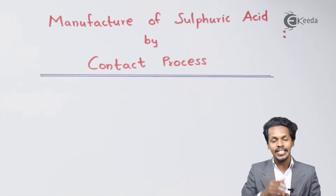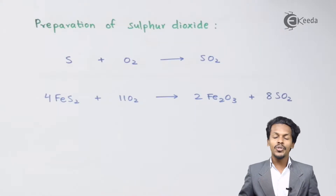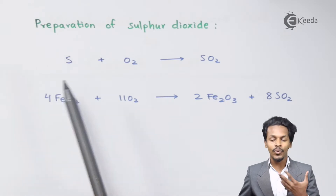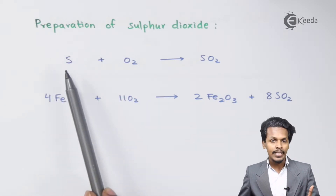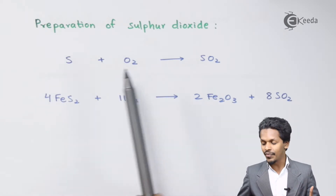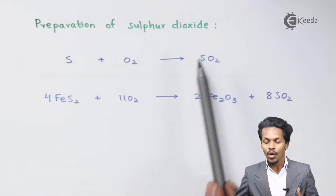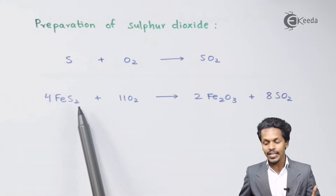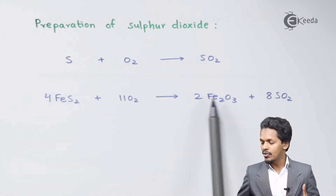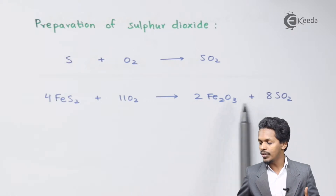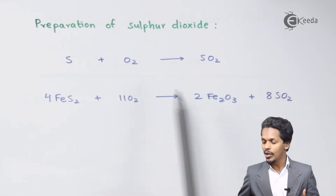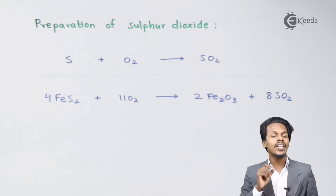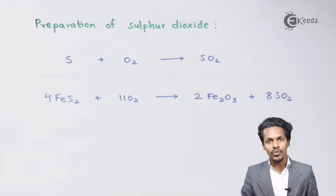The first reaction is the preparation of Sulfur Dioxide. We can prepare SO₂ by burning Sulfur at a particular temperature, or alternatively we can use iron sulfide — 4 moles of iron sulfide along with 11 moles of O₂ — to obtain 2 moles of Fe₂O₃ and 8 moles of SO₂. These are the two methods to prepare SO₂, which plays a vital role in the formation of H₂SO₄.